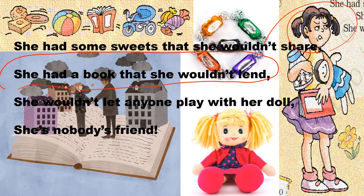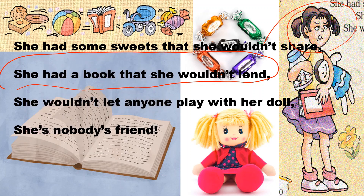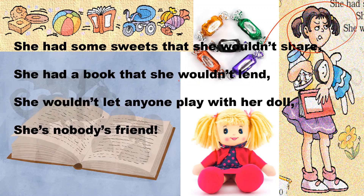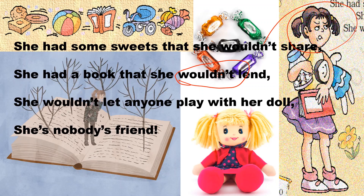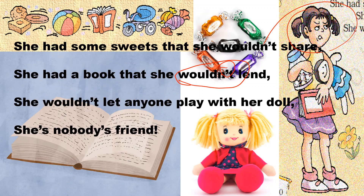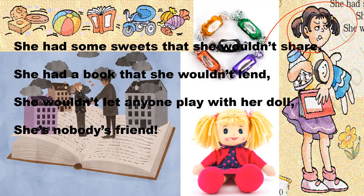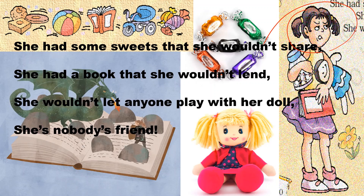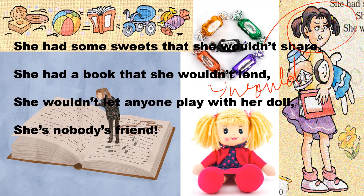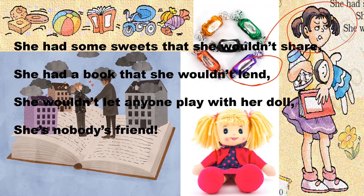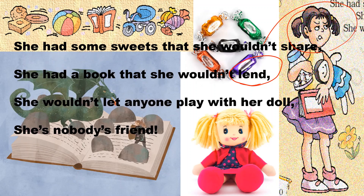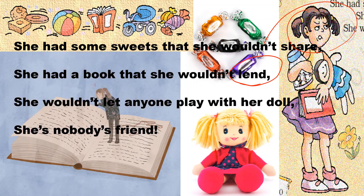In the poem, look at the word 'wouldn't.' What do we mean by 'wouldn't'? Here, 'wouldn't' is a contraction — which letter is missing? The letter 'o' is missing. So this is the contraction of 'would not.' You can practice: 'would not' — contraction: 'wouldn't.' Similarly, 'cannot' — contraction: 'can't.'